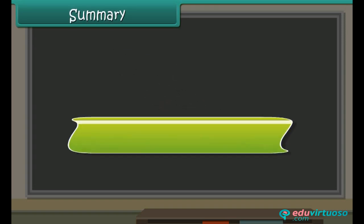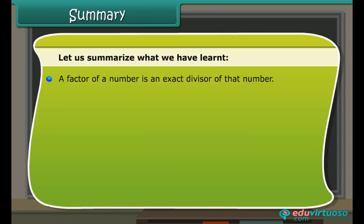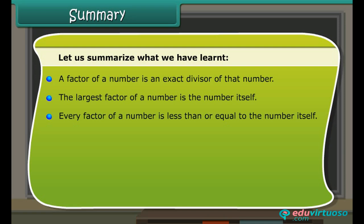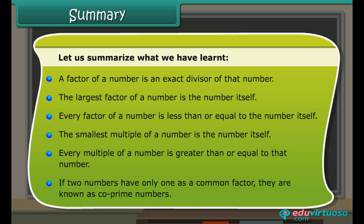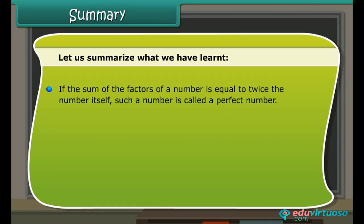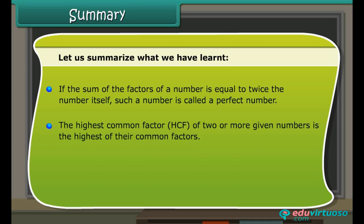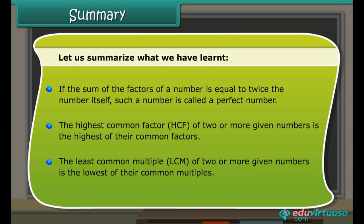Summary: A factor of a number is an exact divisor of that number. The largest factor of a number is the number itself. Every factor of a number is less than or equal to the number itself. The smallest multiple of a number is the number itself. Every multiple of a number is greater than or equal to that number. If two numbers have only 1 as a common factor, they are known as co-prime numbers. If the sum of the factors of a number is equal to twice the number itself, such a number is called a perfect number. The HCF of two or more given numbers is the highest of their common factors. The LCM of two or more given numbers is the lowest of their common multiples.